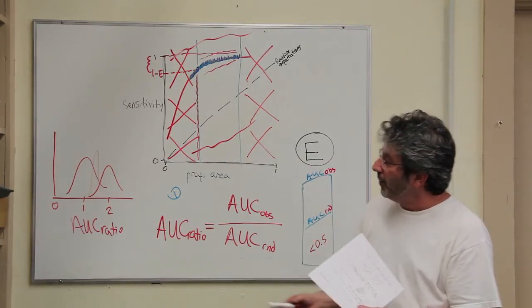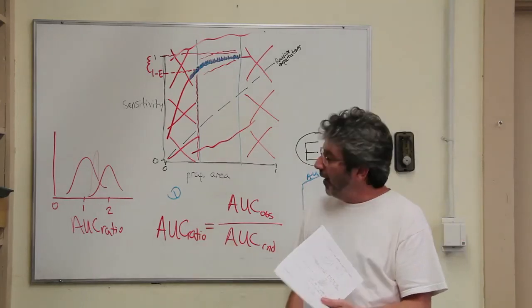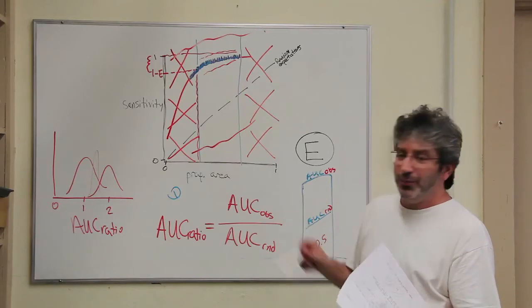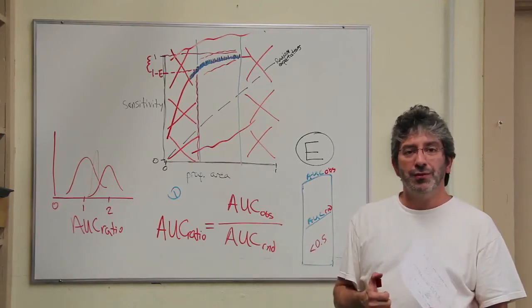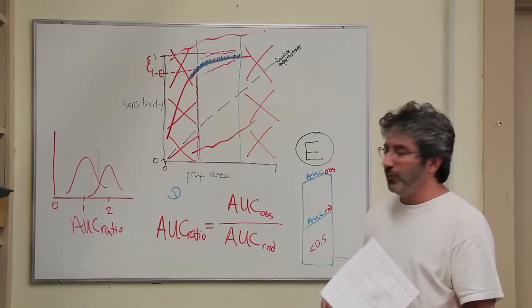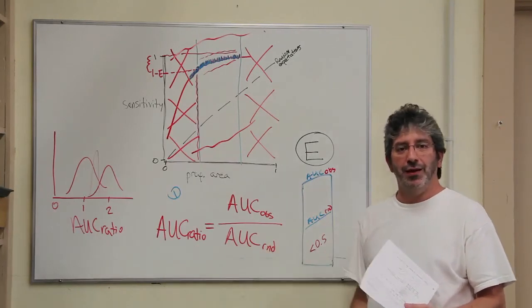There is a program that has been implemented for calculating these bootstrapped AUC ratio distributions. And that is available on the download page for this module. So you'll have access to that as well.